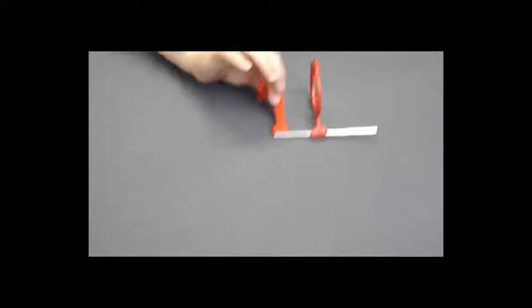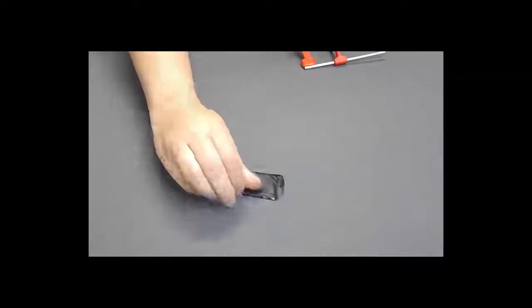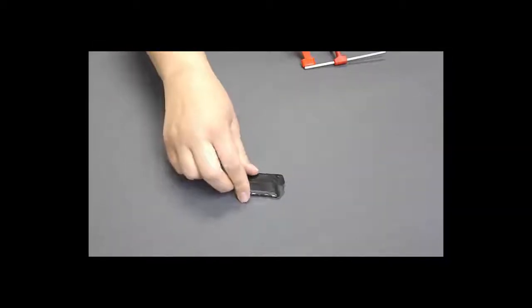You will need a number two size phosphor plate when taking bite wing images. It has a white side and a black side, which is your active side and the side that you would like the radiation to hit.